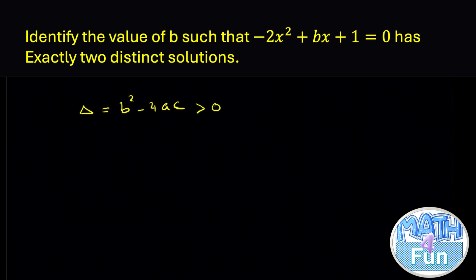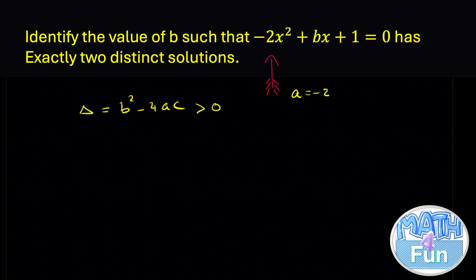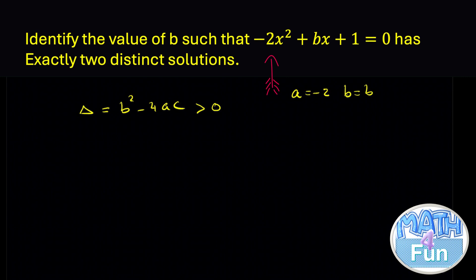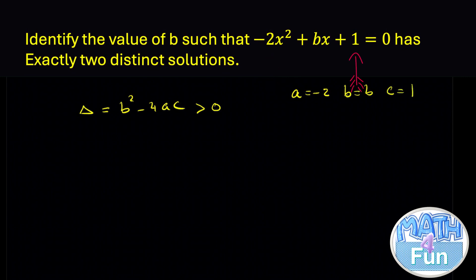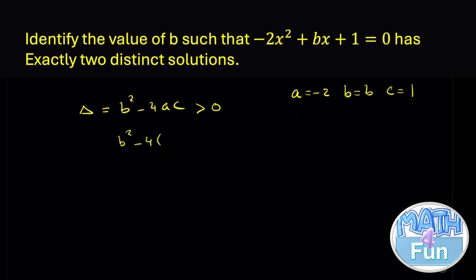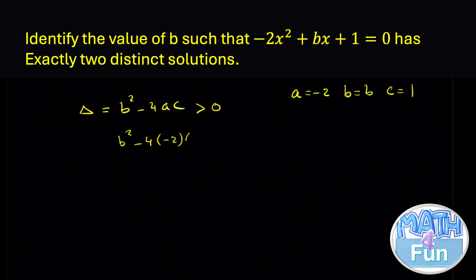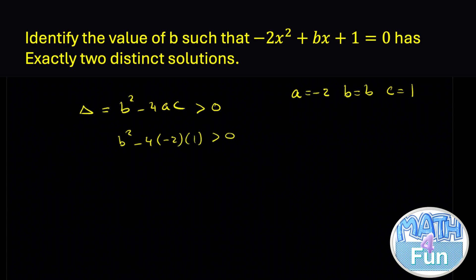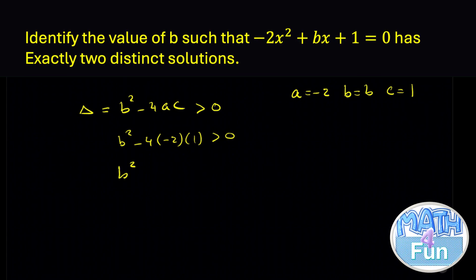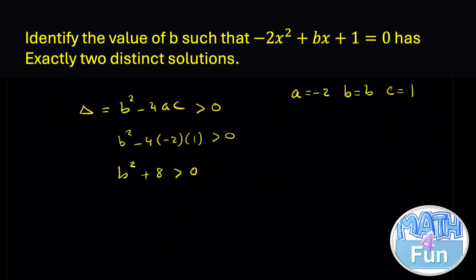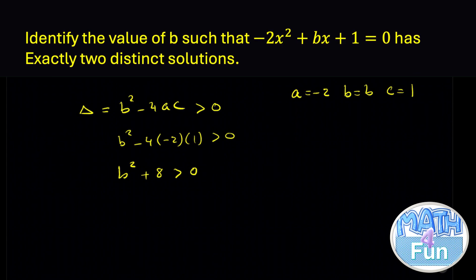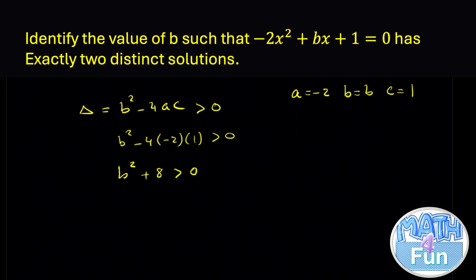Now let's compute delta from the question. Here a = -2, b = b, and c = 1. Replacing those values: delta = b² - 4(-2)(1) = b² + 8, and this must be greater than 0. Since b² is always positive and we're adding 8, b² + 8 is always greater than 0 for any value of b.